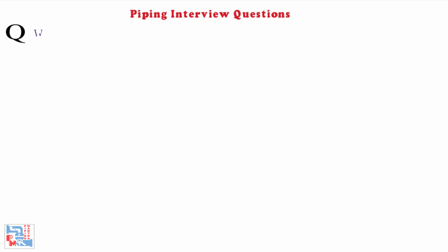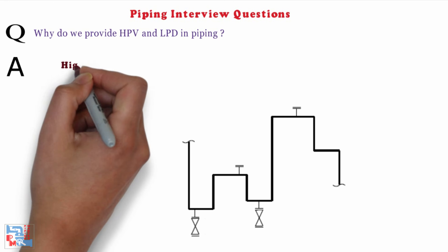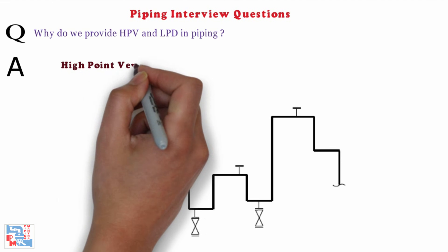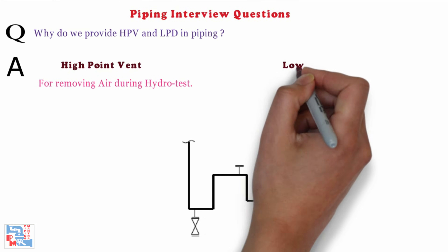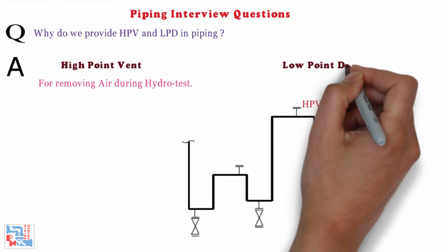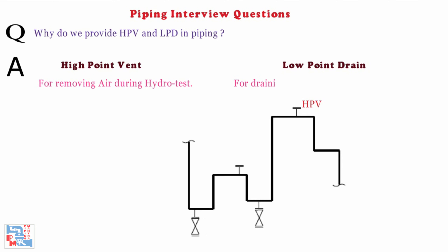Next, where do we provide high point vent (HPV) and low point drain (LPD) in piping? HPV is used for removing air during hydro test, and LPD is used for draining water after conducting hydro test.